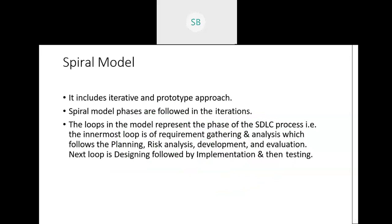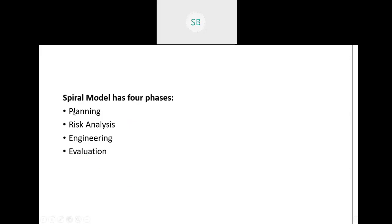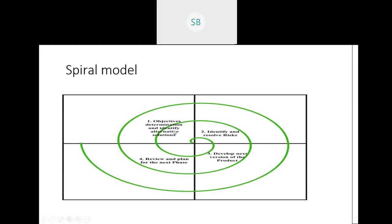The spiral model includes two types: iterative and prototype. It has four phases: planning, risk analysis, engineering, and evaluation. Planning is the requirement gathering and analysis phase. The second quadrant is risk analysis — identifying what risks are associated with the project and what risks can be faced during project development.